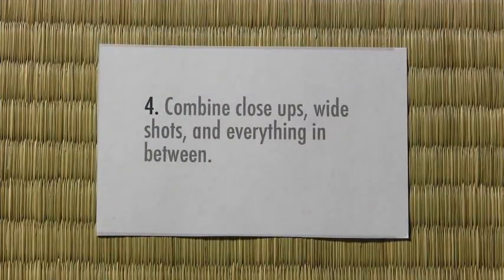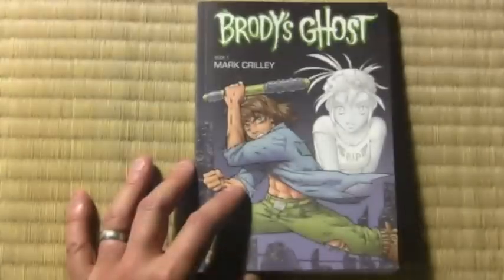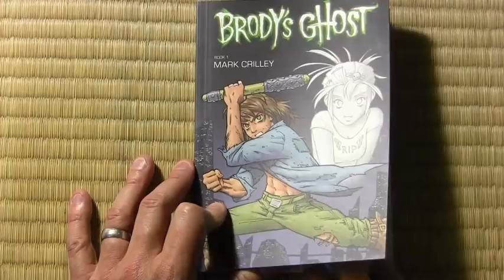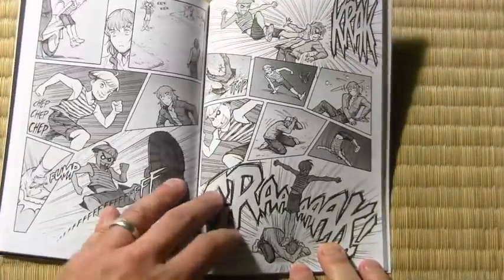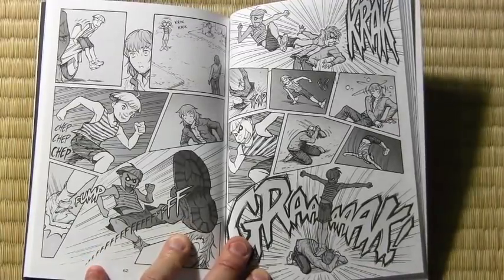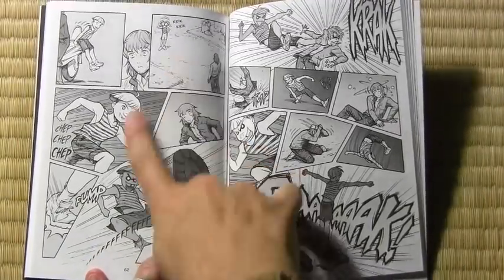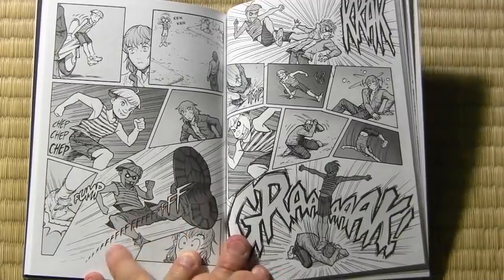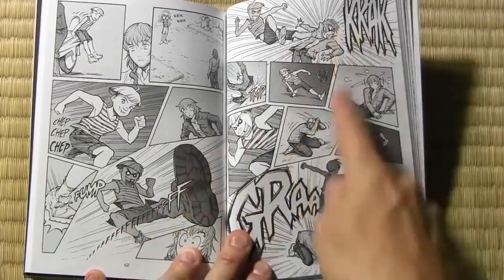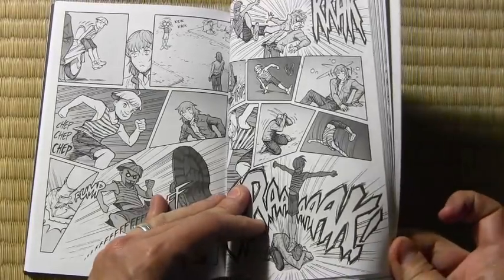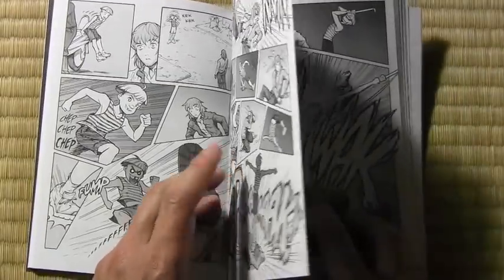Number four: combine close-ups, wide shots, and everything in between. This is from Brody's Ghost, book one — it has more action sequences than any story I've ever done. Here we see a fight between Brody and a 12-year-old boy, jumping up and kicking him in the head. The whole point of the scene is to show that Brody is not a good fighter at this stage in the story.